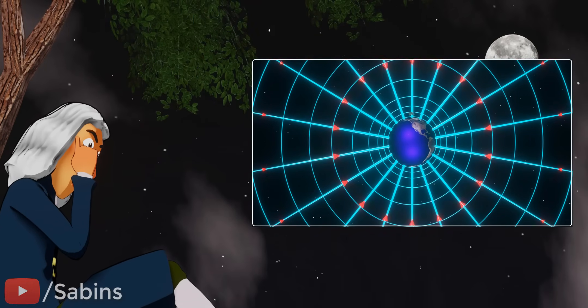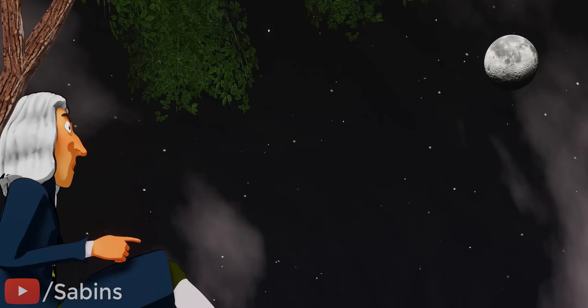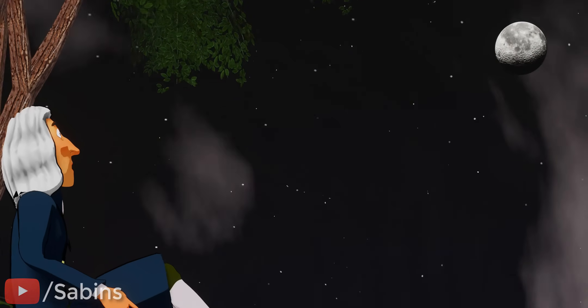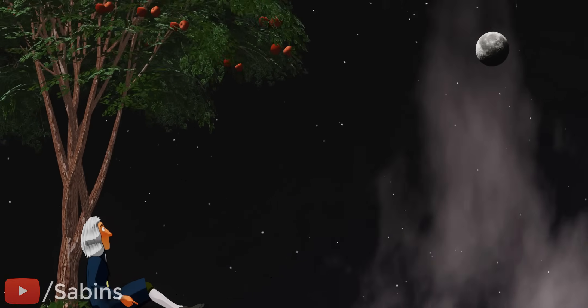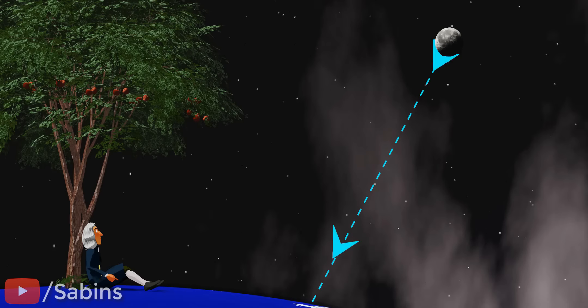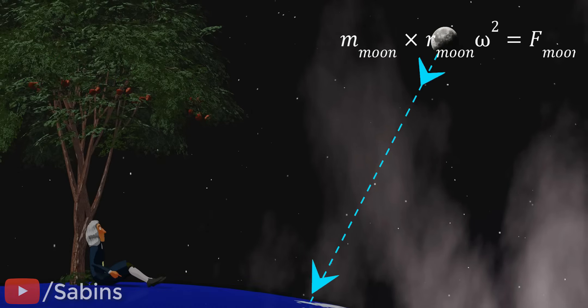To get an answer for this question, he looked at the Moon. The Moon is also attracted to the Earth, due to the same gravitational force. However, the Moon doesn't fall to the Earth because the centripetal force required for the Moon's circular motion is supplied by the gravitational force.